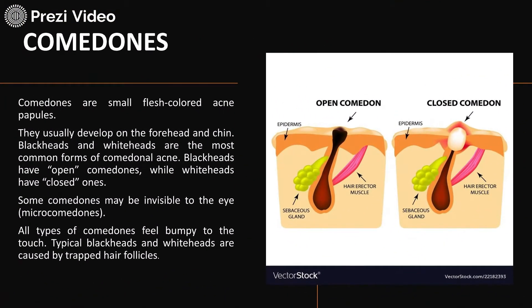Comedones. What are comedones? Comedones are basically the red color papules which appear on the surface of the skin. They are basically bumpy in appearance and they usually develop on the forehead and the chin. They are into two forms — basically the blackheads and the whiteheads. Blackheads and whiteheads are the most common forms of comedonal acne.